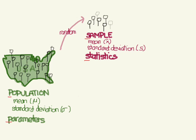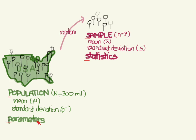There's one more parameter and statistic: the total number of people. For the population, that's represented by an uppercase N — in our example, N equals 300 million, though sometimes we don't even know this value. The total count for the sample is represented by a lowercase n — in our example, n equals seven. So we have our sample with its statistics: the number n, the mean X-bar, and the standard deviation S. And the population has its corresponding parameters: N, mu, and sigma.